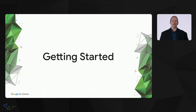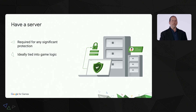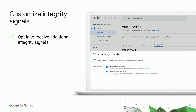So how do you get started with the Play Integrity API? To fully take advantage of this API, you really should have a game server, and that server should be responsible for a critical portion of game logic. This enables you to make game decisions on a tamper-free service, based at least partially upon the signals you get from the Play Integrity API. Like with many of Google Play's APIs, before you start implementing, you need to link a Google Cloud project. We've added an easy way to do this within the Google Play Console. You can also configure which integrity signals your game will receive within the Google Play Console.